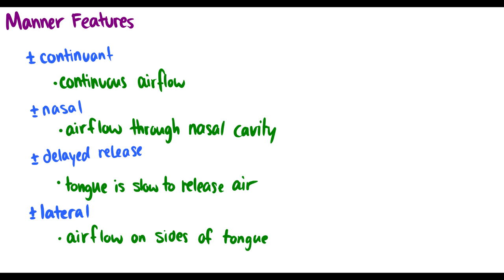Second set of features is the manner features. So continuant, nasal, delayed release, and lateral. Each of these shape how air flows. So continuant is continuous air flow. So s, sh, f, th, th, m, l, r, we all have this continuant airflow with these sounds. So this is basically what I like to say, not plosives, or not stops. That's basically what continuant is.